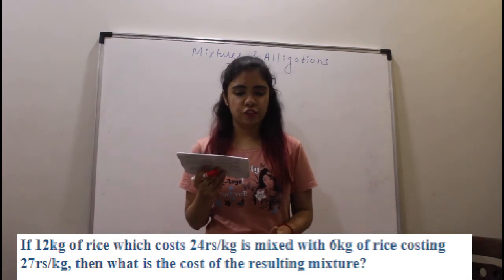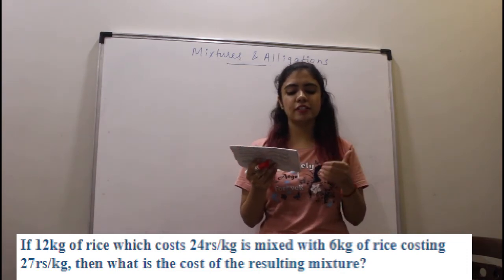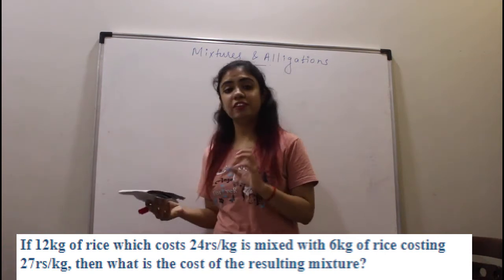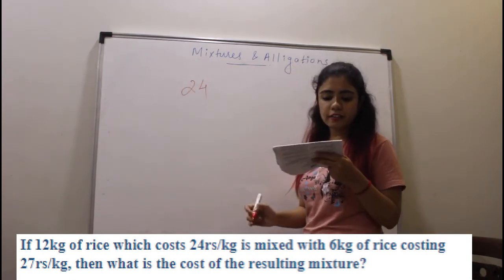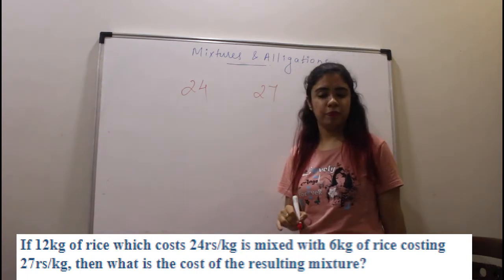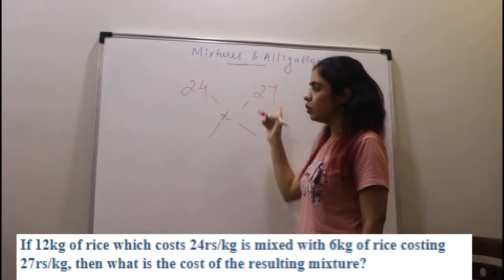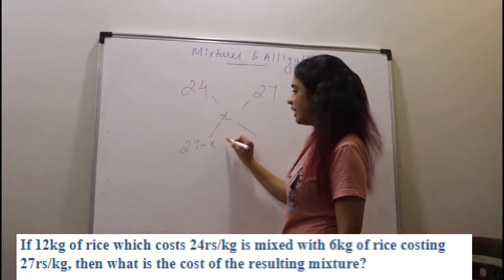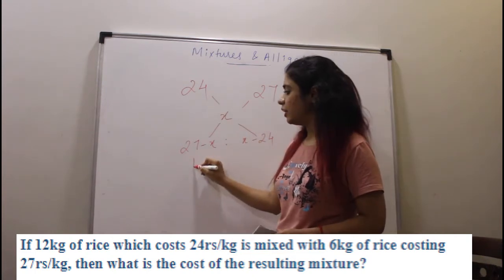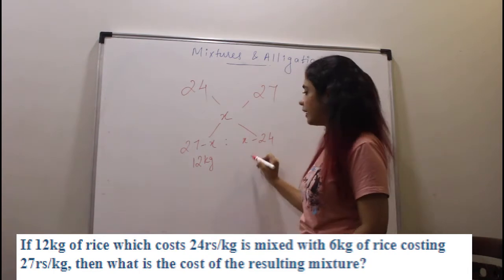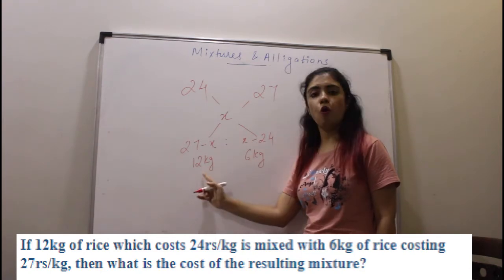So 12 kg of rice costing 24 rupees per kg is mixed with 6 kg of rice costing 27 rupees per kg. They are asking what is the cost price of the resulting mixture. Your cheaper rice costs 24 rupees per kg, dearer rice costs 27 rupees per kg, and the cost of the mixture we call x. Taking a cross: this will be 27 minus x, and this will be x minus 24. The ratio of prices is the same as ratio of quantities.